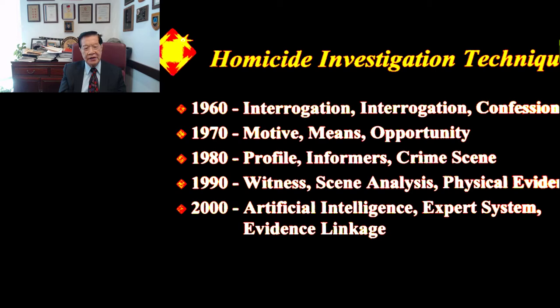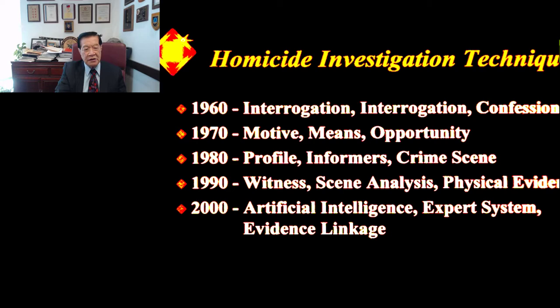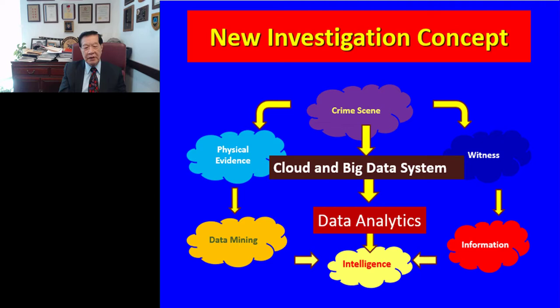By the 1990s, investigation techniques started shifting toward witnesses, crime scene analysis, and physical evidence. Now we have entered a new era. Forensic investigation has started applying big data systems, artificial intelligence, expert systems, evidence linkage, timeline analysis, and geographic analysis. Today, the new investigation concept looks at six elements: crime scene, witnesses, public information, physical evidence, data mining, and developed intelligence — using big data systems, data analytics, and artificial intelligence to solve cases.